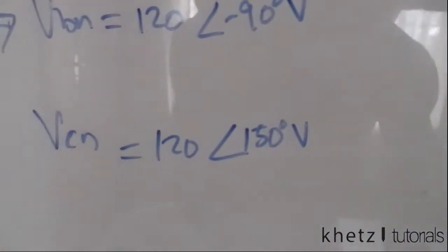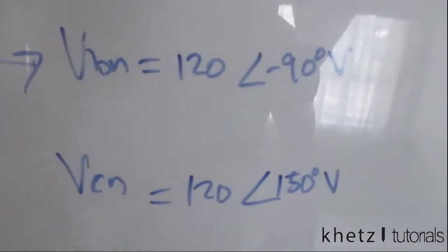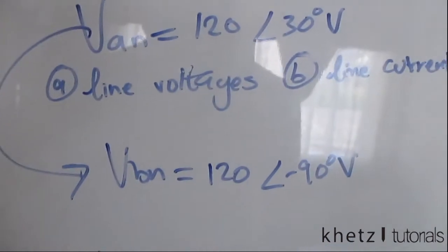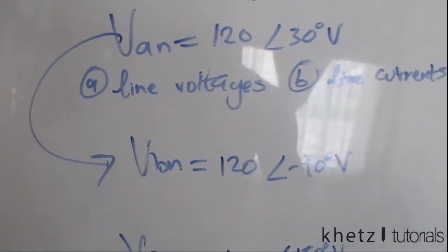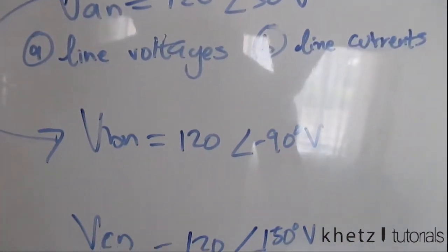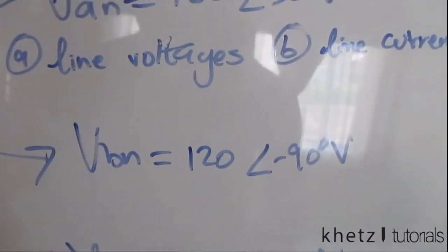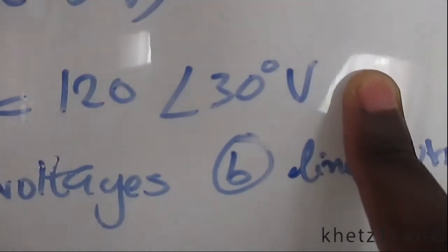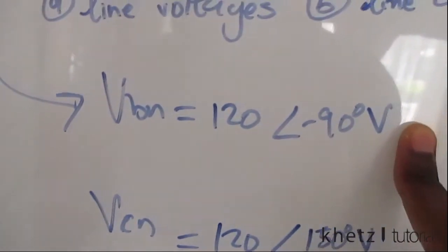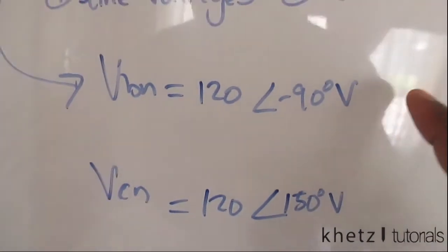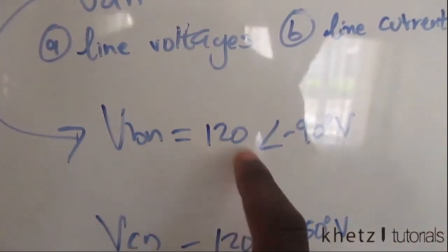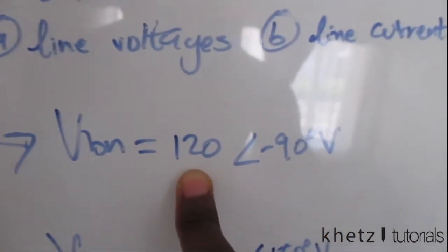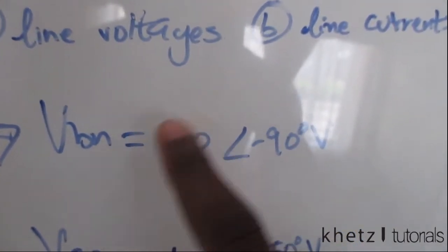Now we have those two values. The first part of the question asks us to find the line voltages. The line voltages lead their corresponding phase voltages by 30 degrees — so whatever you have as your phase voltage angle, you add 30 degrees to find the corresponding line voltage. The magnitude of the line voltages is the square root of 3 multiplied by the phase voltage magnitude.